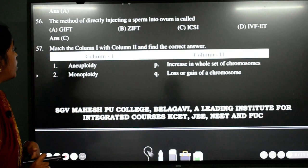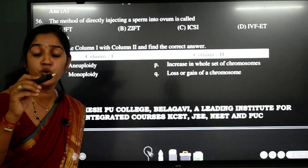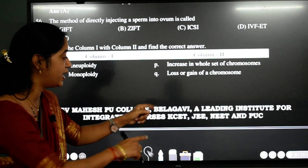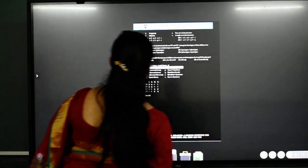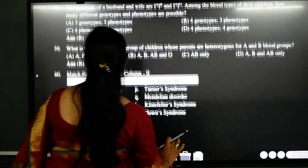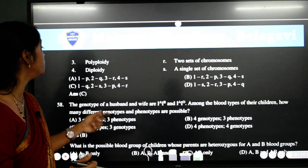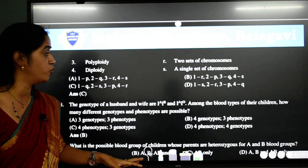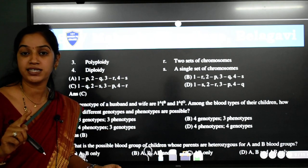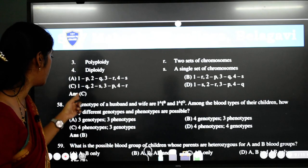Next one. Match the column 1 with column 2 and find the correct answer. Aneuploidy loss or gain of one chromosome 2n minus 1 or 2n plus 1. Monoploidy here you will be having single set of chromosome. But let us see the option in the next slide. So here we have the options. Polyploidy is nothing but multiple set of the chromosome and diploidy will be having two set of the chromosome. So if you match the things you will get answer as C. Aneuploidy one chromosome more or less. Monoploidy one set of chromosome, diploidy two set of chromosome and polyploidy is multiple set of chromosomes. So answer is C.